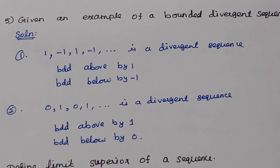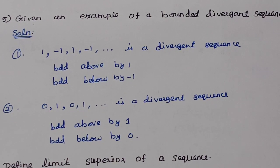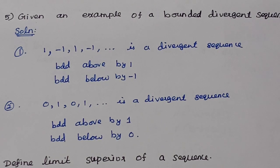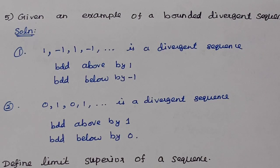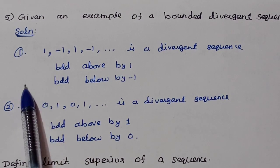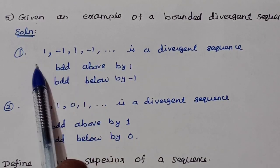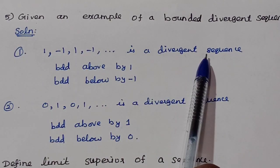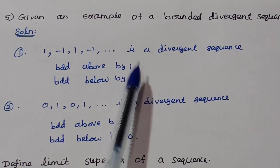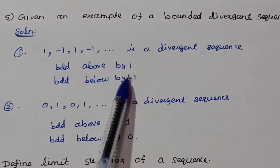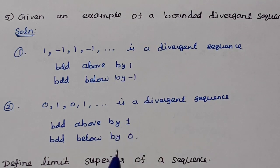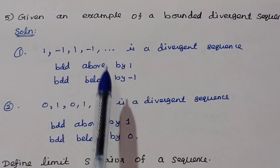Fifth question: give an example of a bounded divergent sequence. Divergent sequences fall into three categories: divergent to +∞, divergent to −∞, and oscillating sequences. A bounded sequence does not necessarily converge — bounded does not imply convergent.